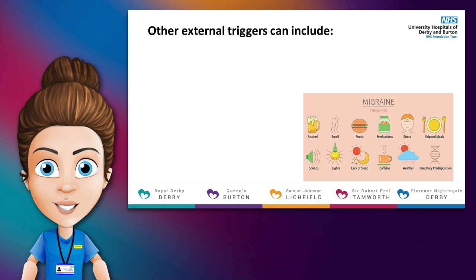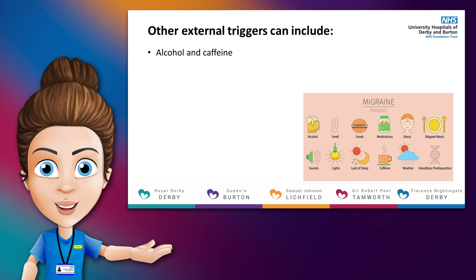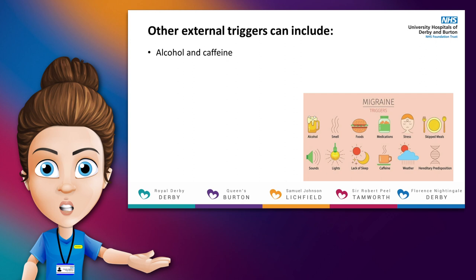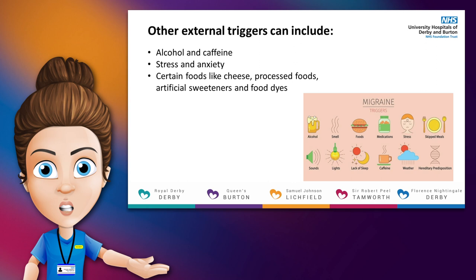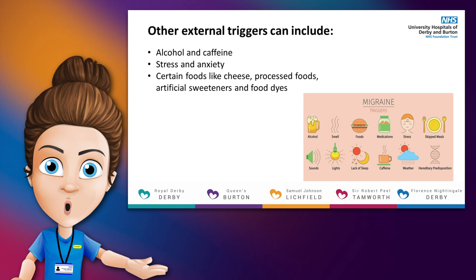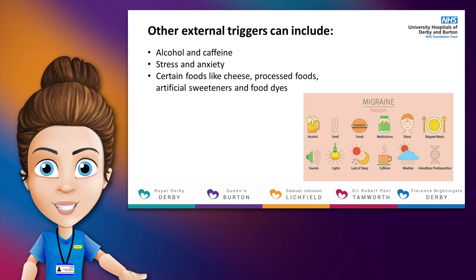Other external triggers. There are many external triggers for vestibular migraine and these can vary from person to person but some common ones include alcohol and caffeine. With both of these it's likely due to the dehydration they cause and or the effect the chemicals have on the blood vessels in the brain. Another common trigger is stress and anxiety, likely caused by the changes in levels of certain chemicals in the brain such as serotonin which helps to regulate pain. Certain foods can be a trigger, for example cheese which contains the chemical tyramine and processed foods which contain nitrates. Artificial sweeteners and food dyes are also known to trigger some people.